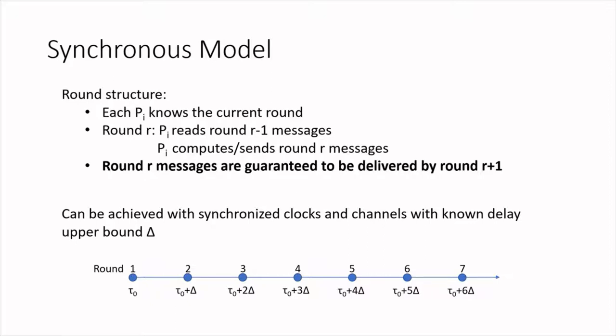The idea is simple: we just start round 1 at some fixed time tau_0, and then each round takes delta clock ticks.